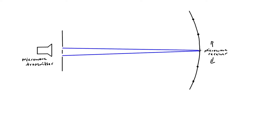Microwaves are being diffracted from each slit onto the receiver when it is located at the central position. The microwaves have to travel exactly the same distance from each slit to reach the receiver. Therefore, if the waves started in phase, they will remain in phase at this position and overlap in phase - constructive interference takes place and we produce a maximum. So to recap: microwaves are diffracted at each slit, they superpose, travel the same distance, arrive in phase, constructive interference, maximum produced.